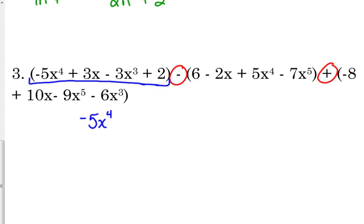Negative 5x to the 4th, negative 3x cubed. I don't have an x squared, leave a space for it, plus 3x, plus 2.